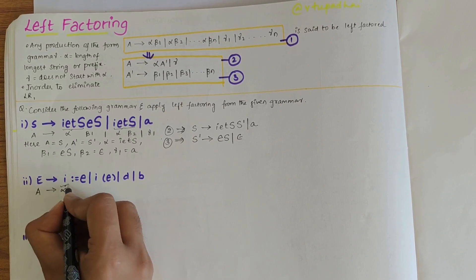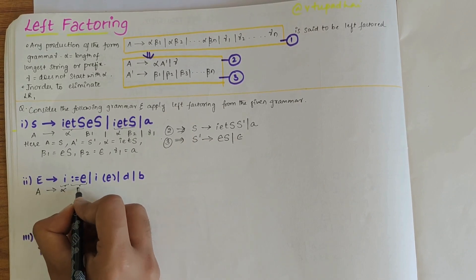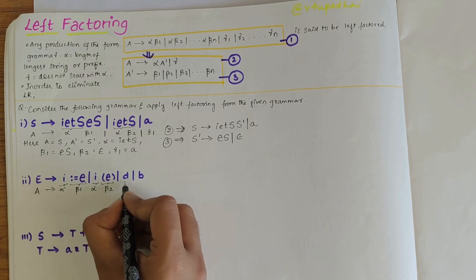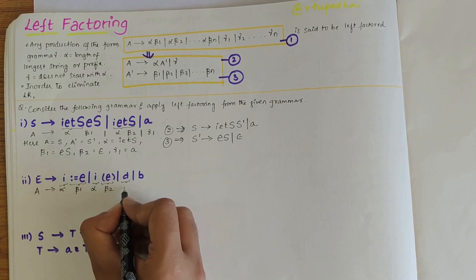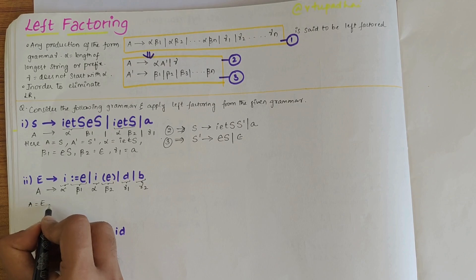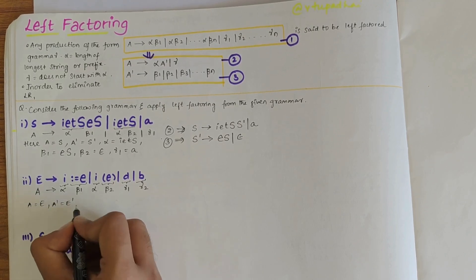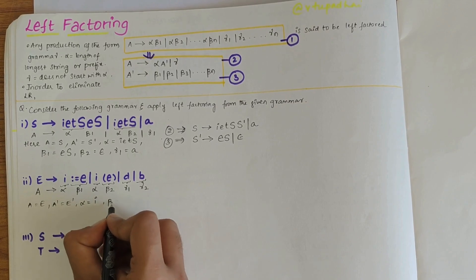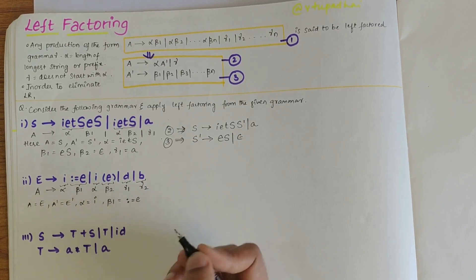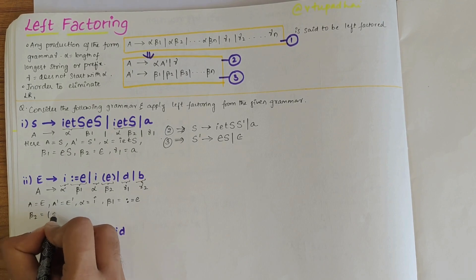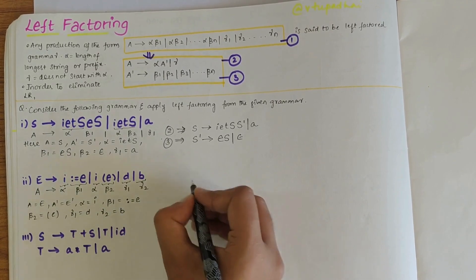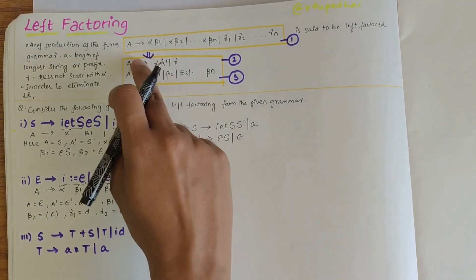Moving on to the second grammar: A derives i:=E | i(E) | d | b. We take 'i' as alpha; the entire ':=E' is beta1, and 'i(E)' gives beta2 as '(E)'. There is no 'i' in 'd' or 'b', so we take 'd' as gamma1 and 'b' as gamma2. Here A is E, A' is E', alpha is i, beta1 is ':=E', beta2 is '(E)', gamma1 is d, and gamma2 is b.